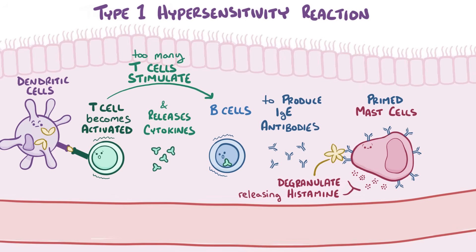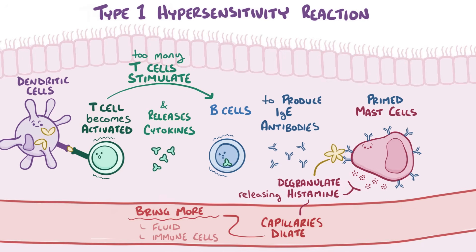The histamine causes blood capillaries to dilate and become leaky, which brings more fluid and immune cells to the area where the mast cells are located. Because the eyes and nose are portals of entry for infections, there are lots of mast cells around those areas for extra protection. So those IgE-primed mast cells release their histamine, which causes nearby capillaries to dilate, flooding the facial tissues with fluid.